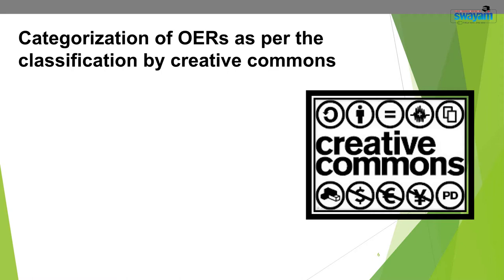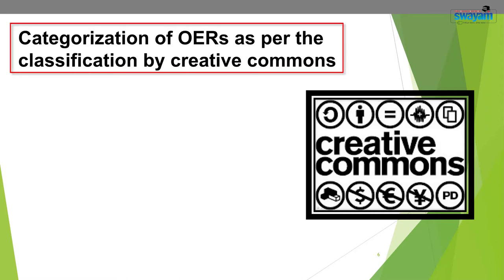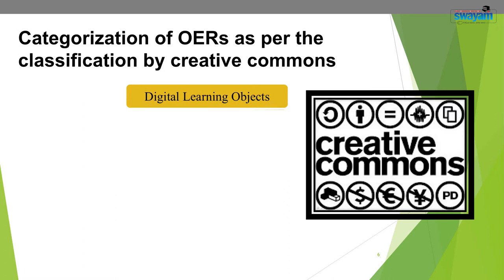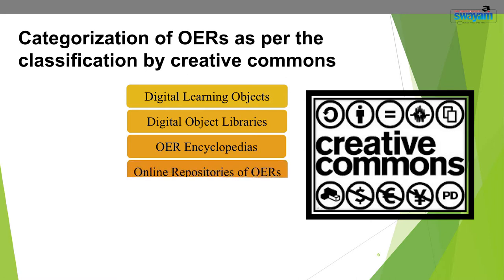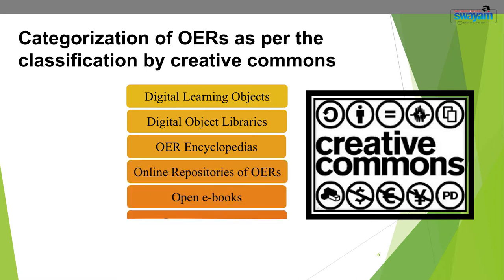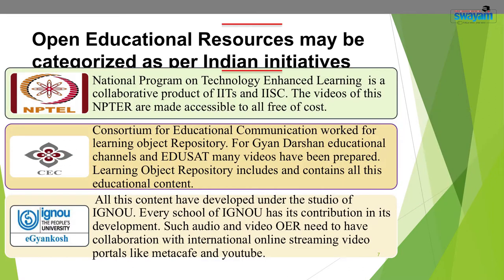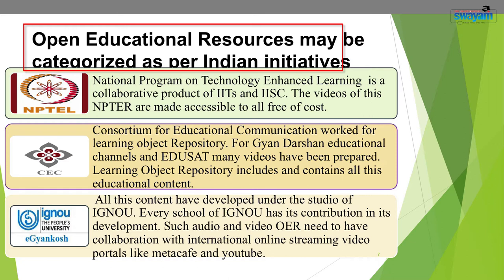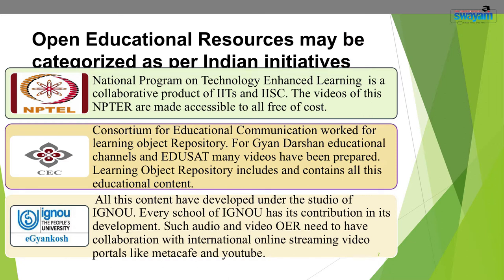If we classify open educational resources on the basis of type of content, these can be categorized into four main categories. The categorization of OERs as per Creative Commons classification includes: digital learning objects, digital object libraries, OER encyclopedias, online repositories of OERs, open e-books, open courseware, open courses, and open educational resources categorized as per Indian initiatives.